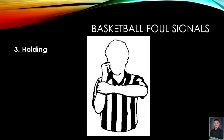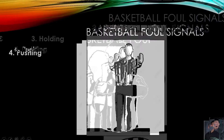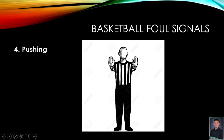The next one is the holding foul. The holding signal is made by having one arm extended upwards in front of the face and the other hand grabbing the wrist. Number four is the pushing foul. To signal a pushing foul, the official will have both hands extended straight in front of him with his palms facing outward.